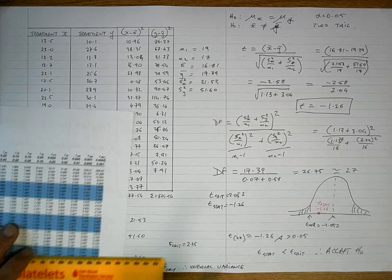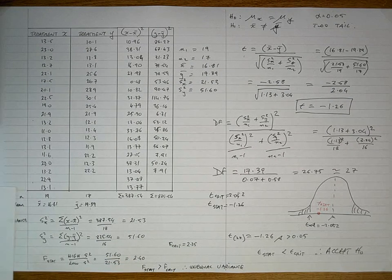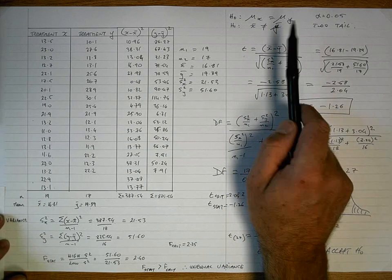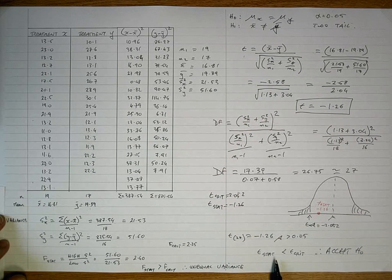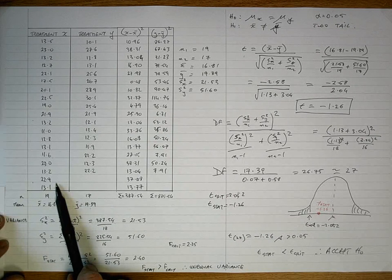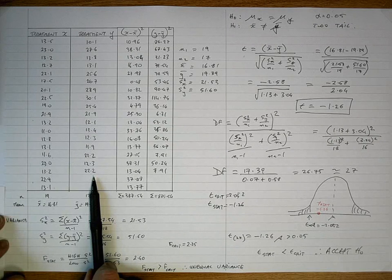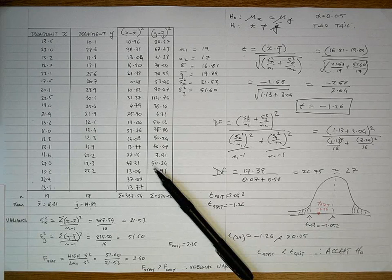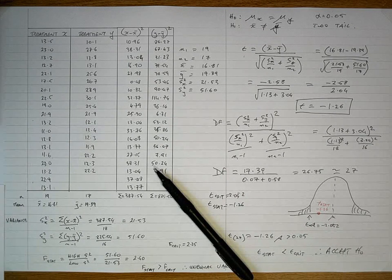Our conclusion is that there is no difference between treatment X and treatment Y in these data. That's how you calculate manually a t-statistic for unpaired independent data when variance is unequal. Thank you for your attention.